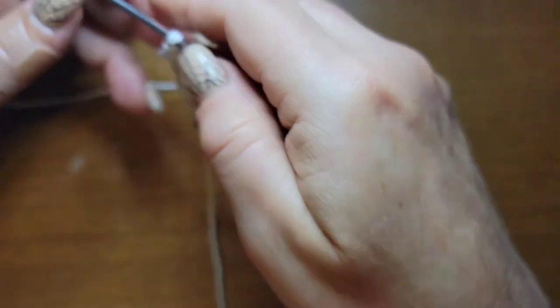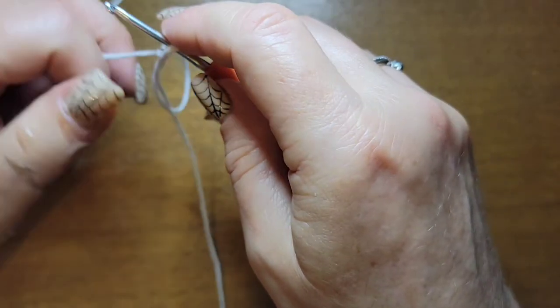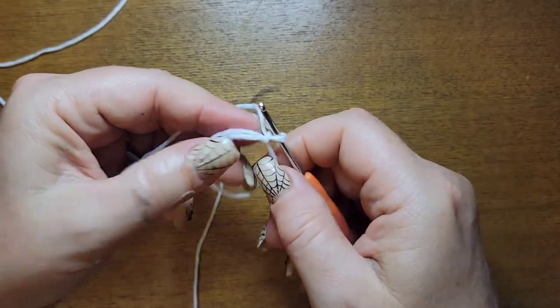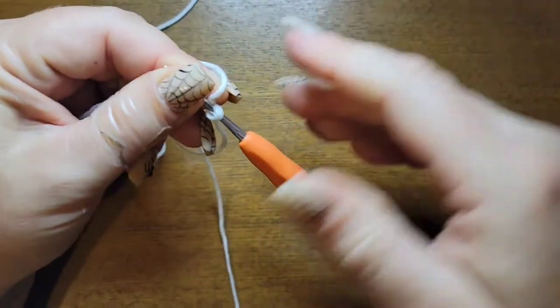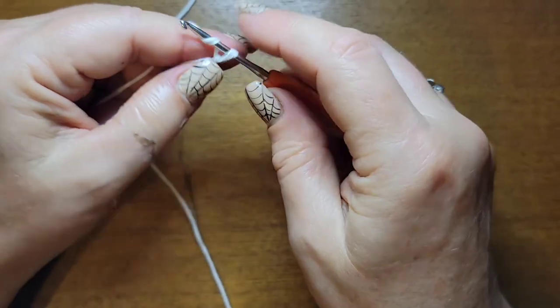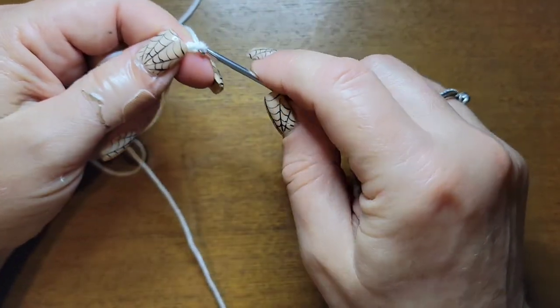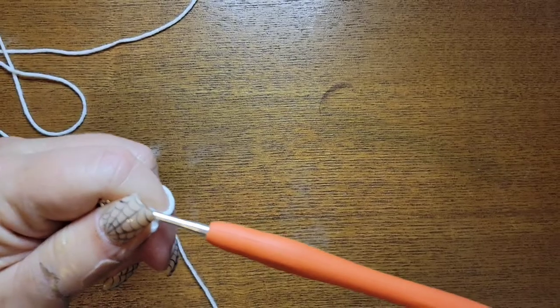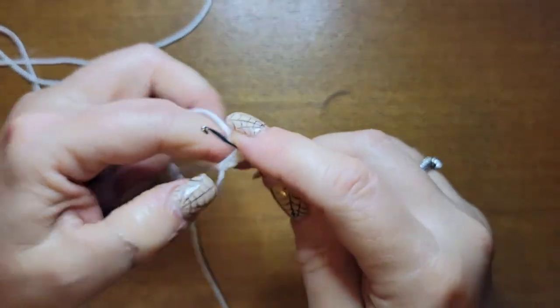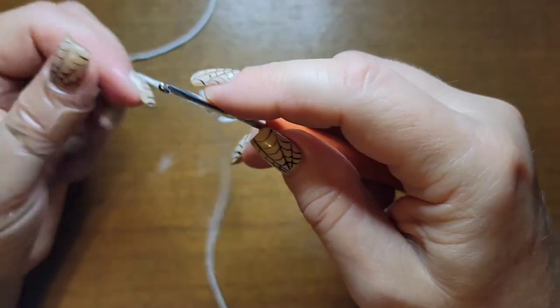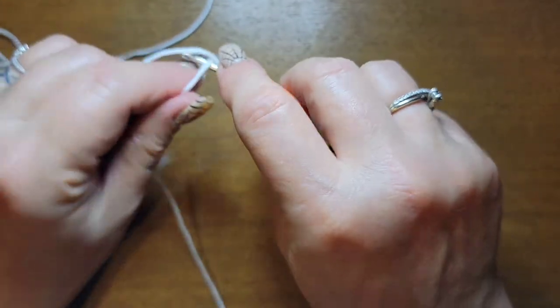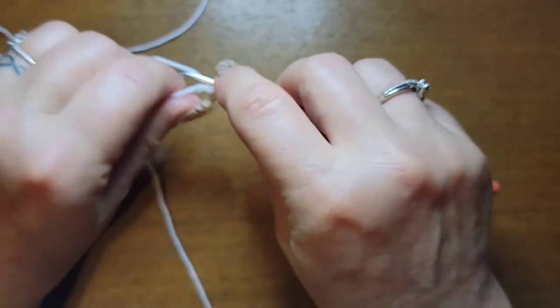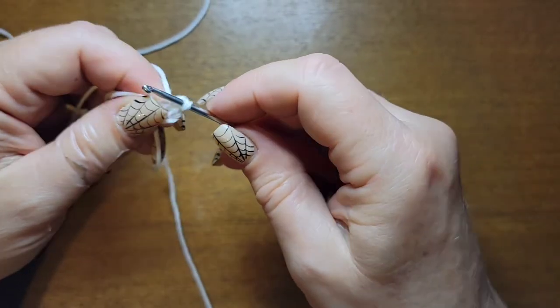When you crochet, just crochet over both pieces. Now what I want you to do—we already chained one, so you should chain three more. And now after you chain your three, put in another double crochet right in that circle.